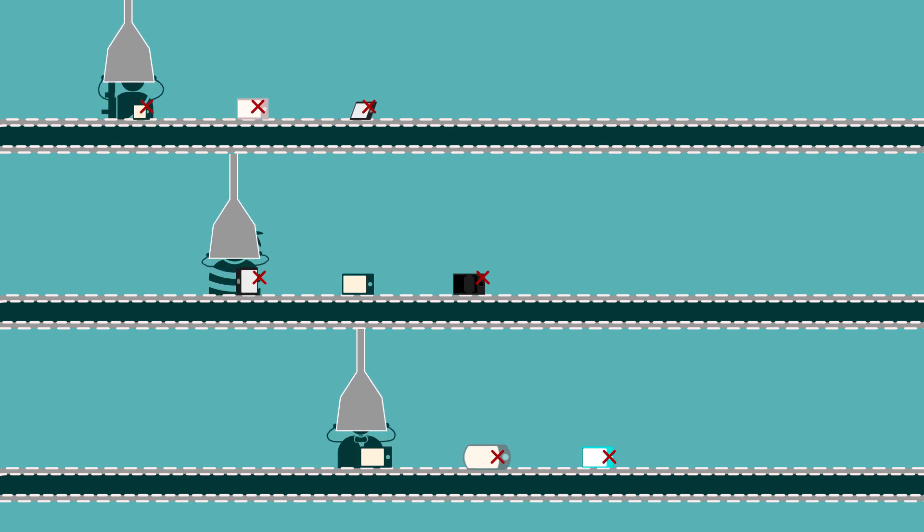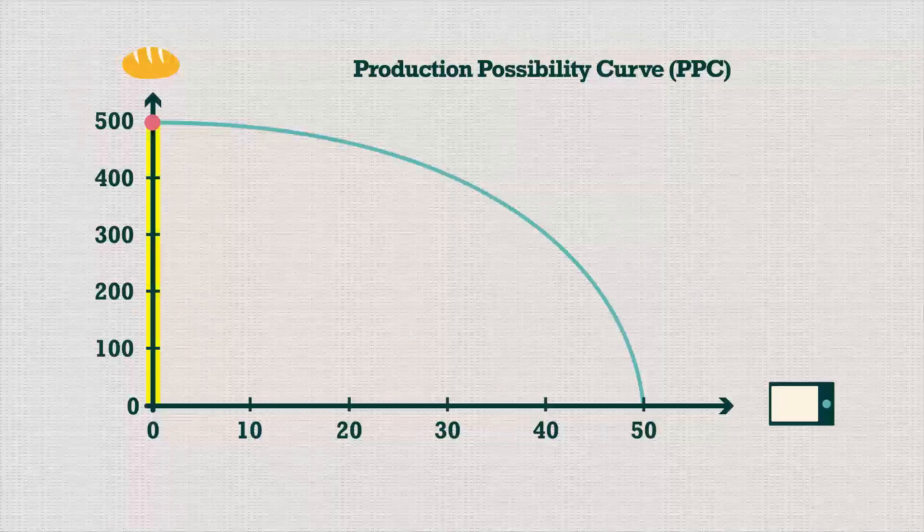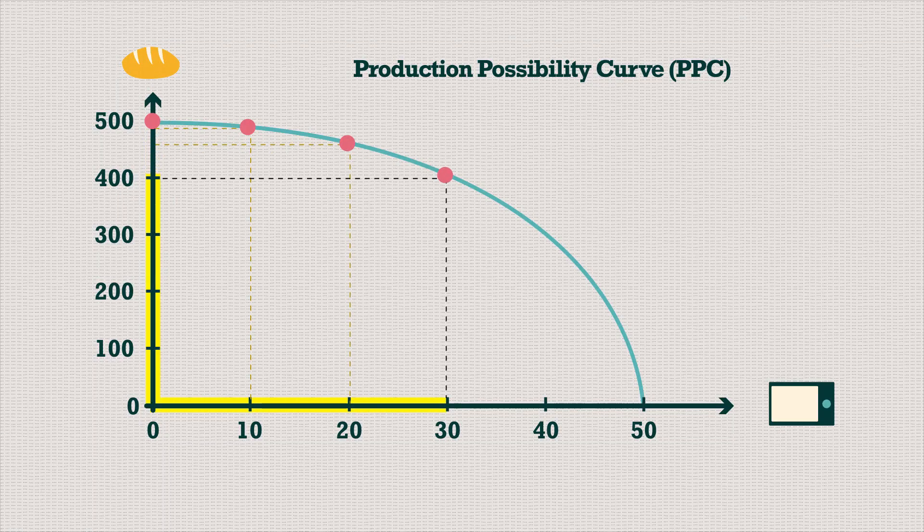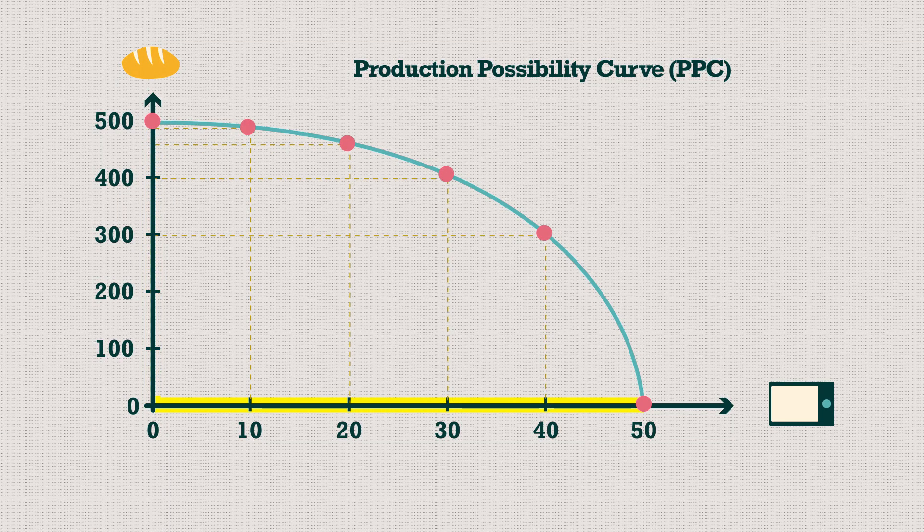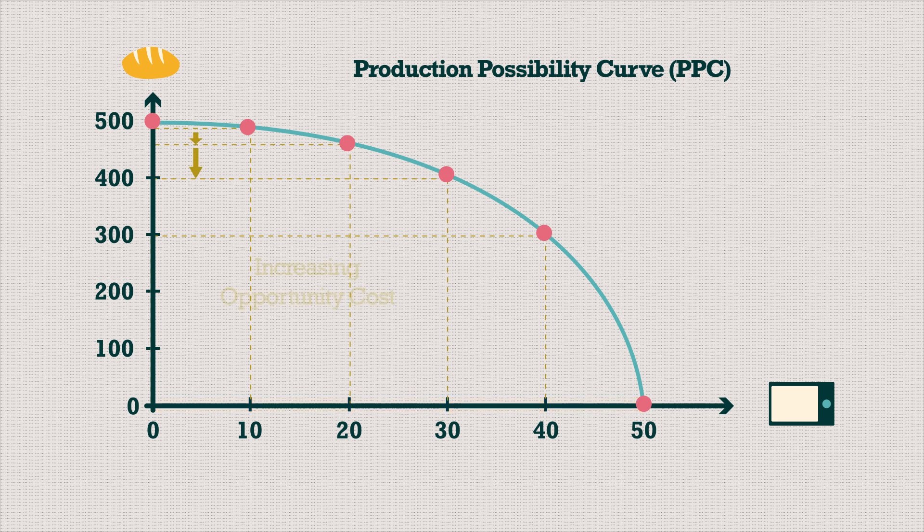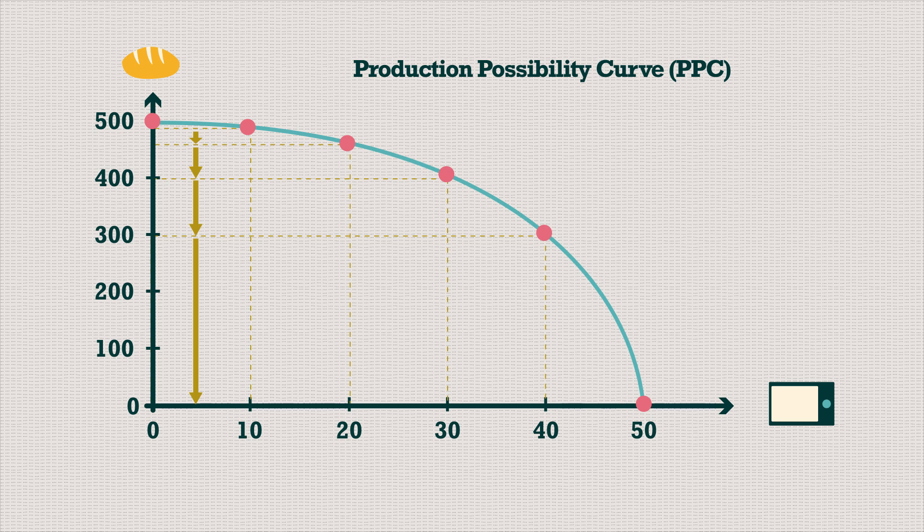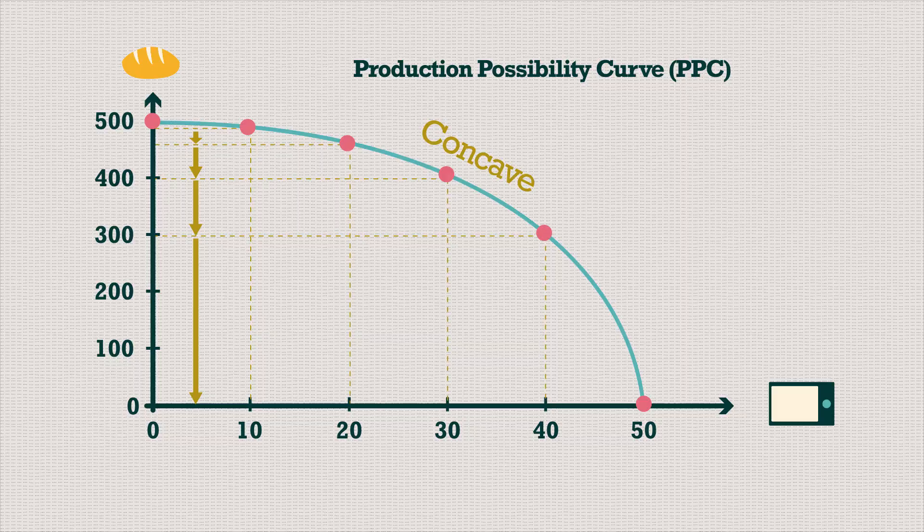Utterly inefficient. So as you produce more and more tablets, you give up more and more bread. This is the law of increasing opportunity cost. You see, for every subsequent batch of tablets you produce, you give up more and more bread. Understand why the Production Possibility Curve is concave now?